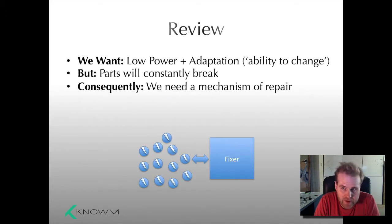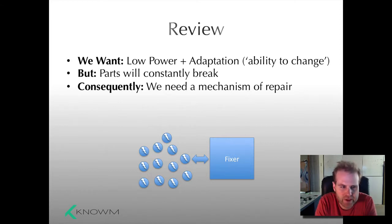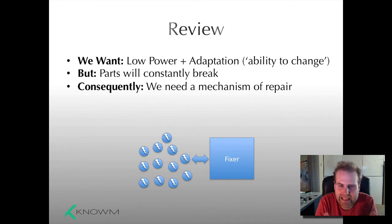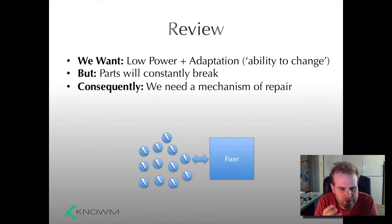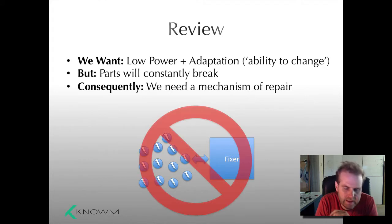In a previous episode, we concluded with something like this: we want to get a very low power processor circuit that is also capable of adaptation — the ability to change. And consequently, that results in the parts breaking. The memory we would use to hold the synaptic weights, for example, would constantly be breaking, would be volatile, it would decay. Consequently, we needed a mechanism to repair this, and we introduced the idea of a fixer circuit — an extrinsic circuit that would repair the parts — and we showed that it didn't really work.